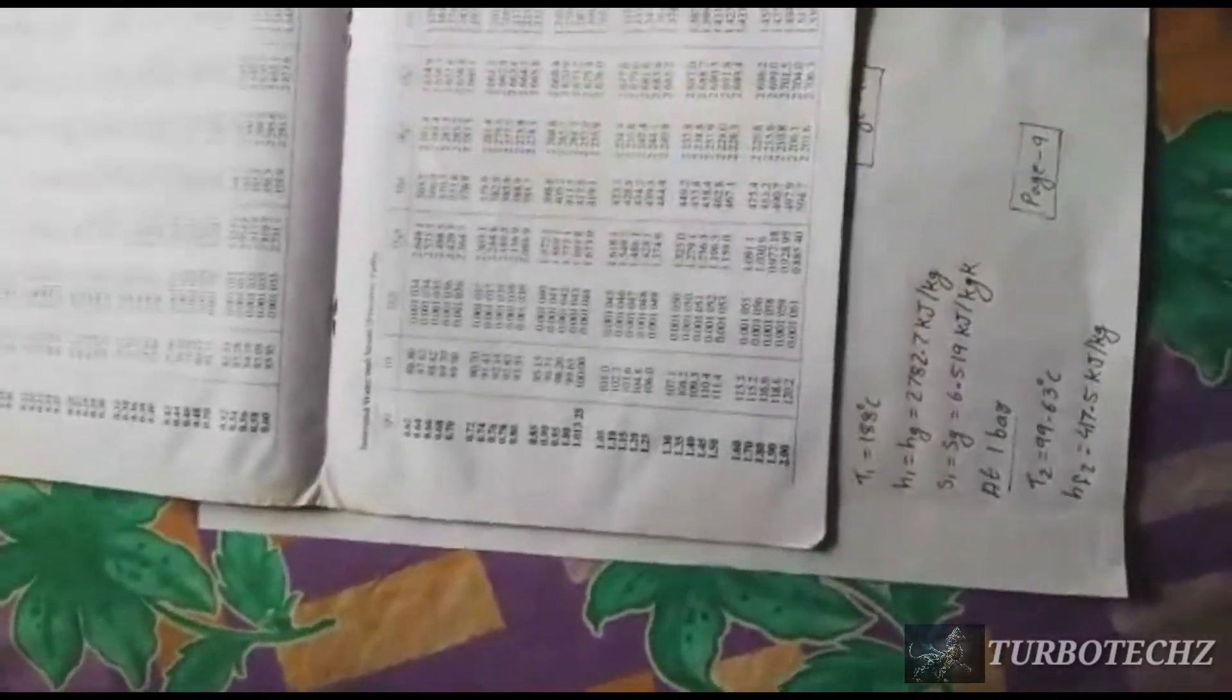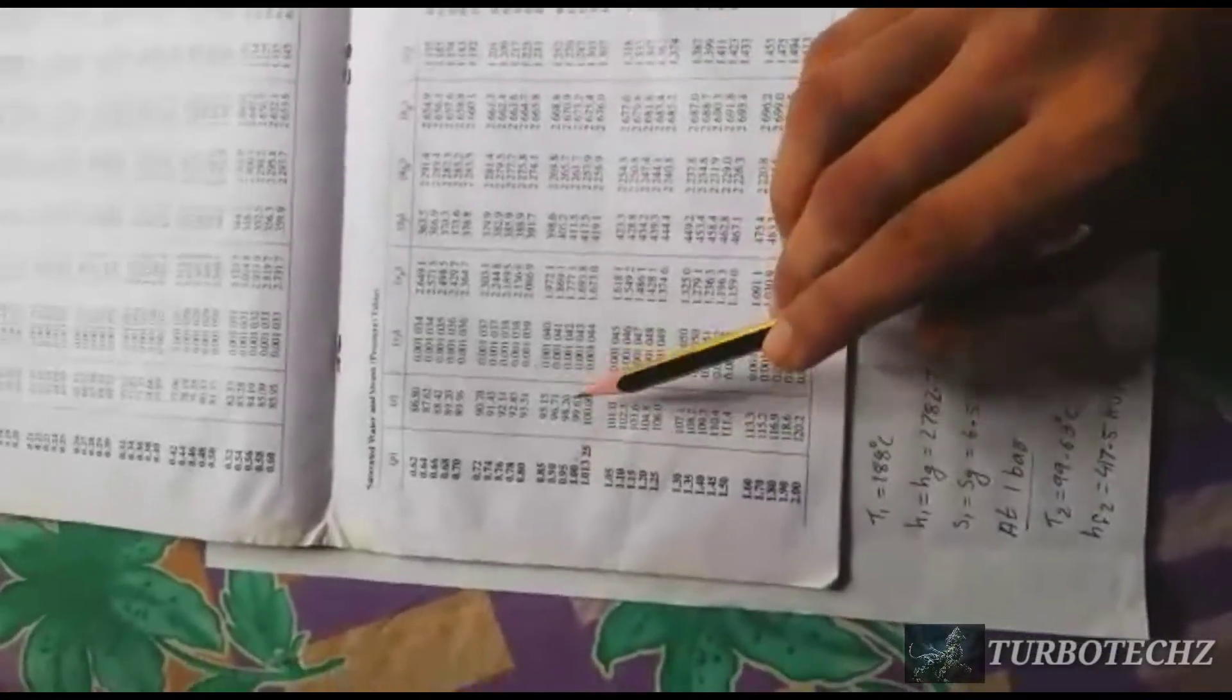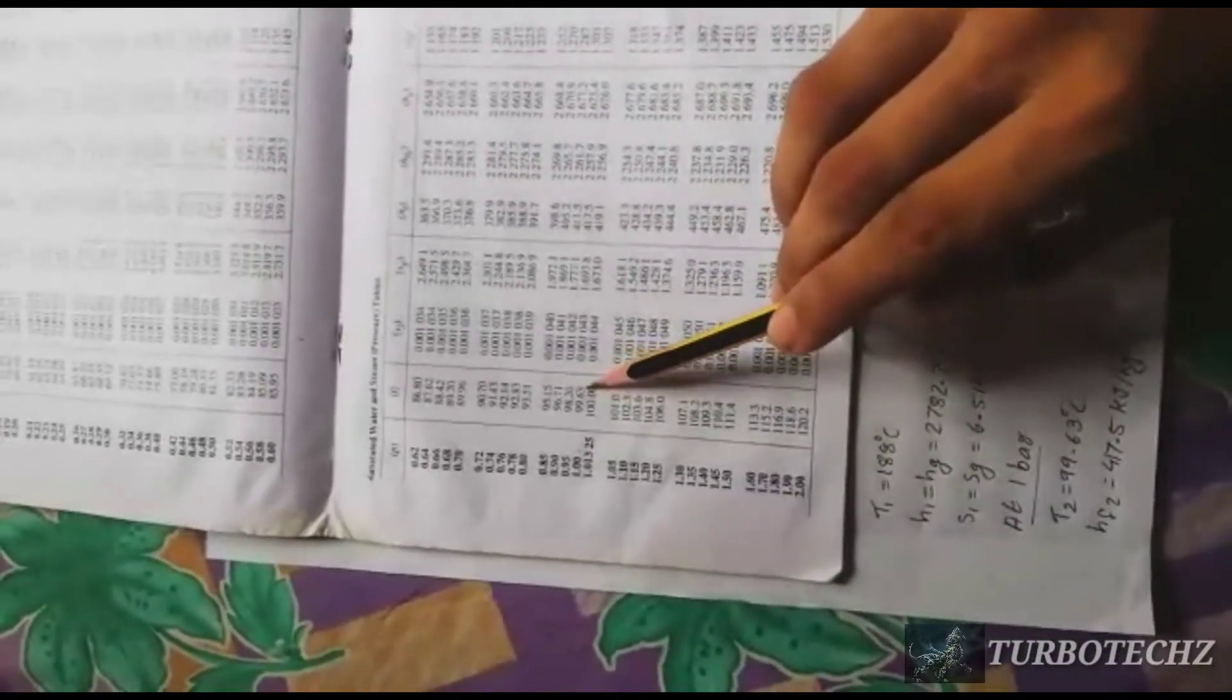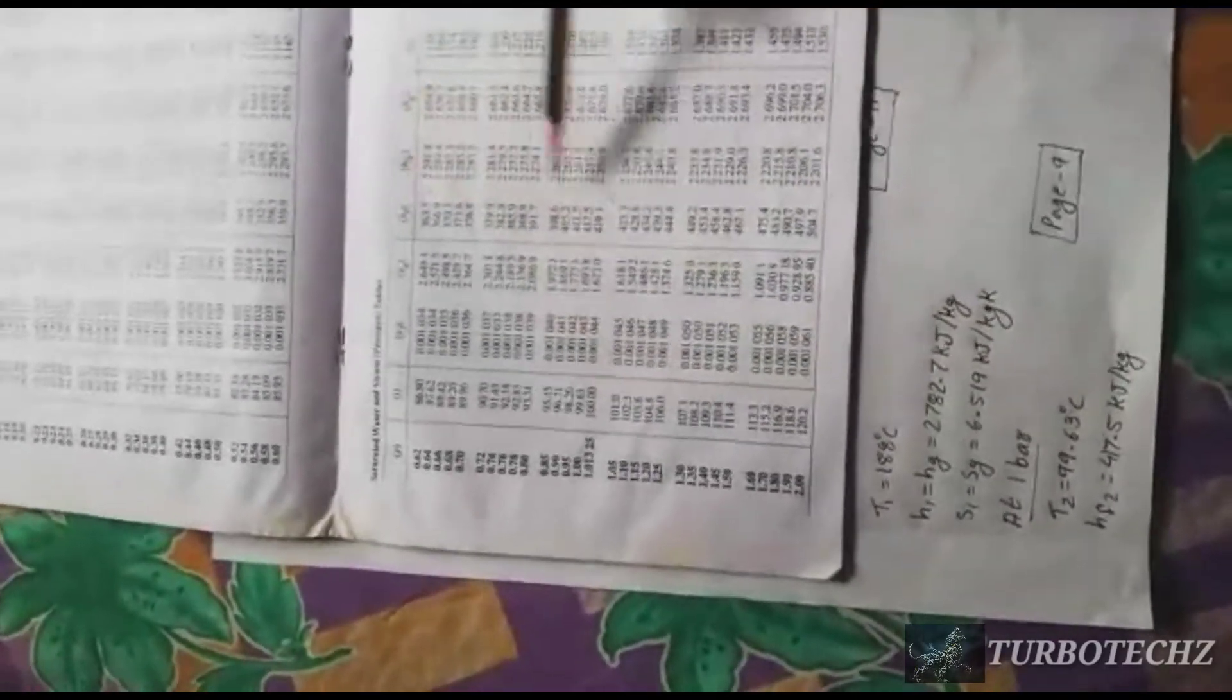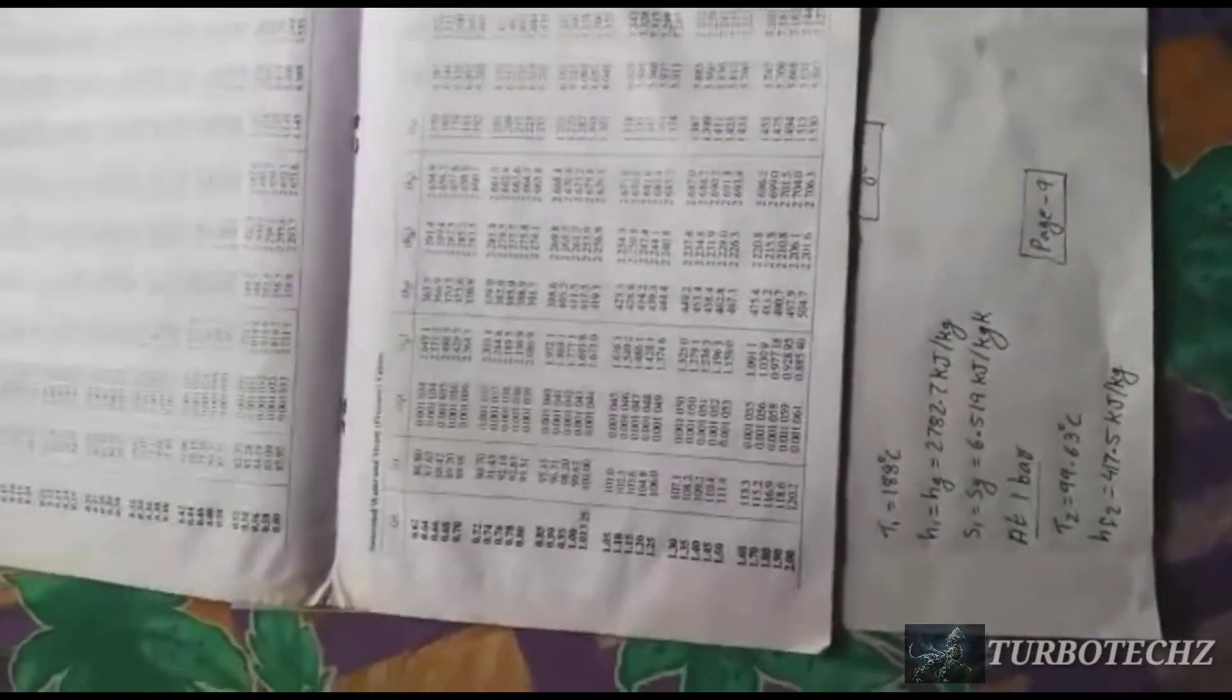Second, 1 bar pressure condition. Page number 9, 1 bar pressure condition. Temperature is 99.63 degrees Celsius. That is HF value, HFG, SG, SFG. This is the 1 bar pressure condition.